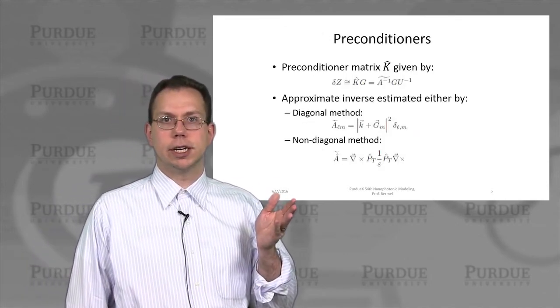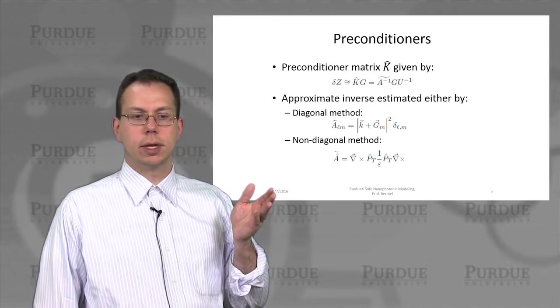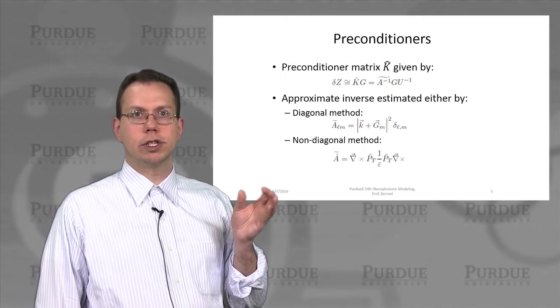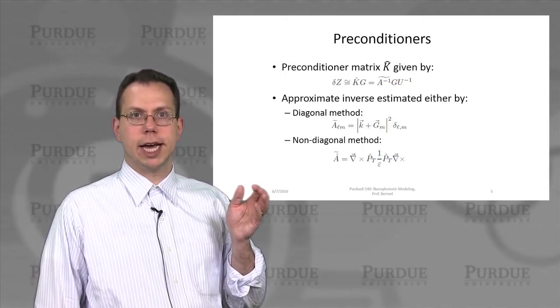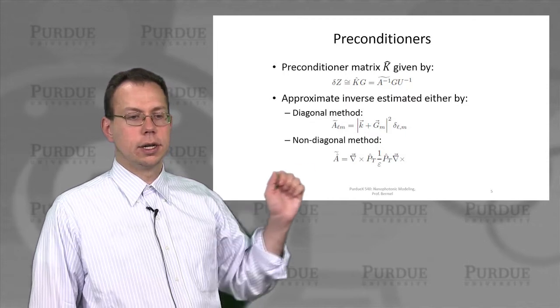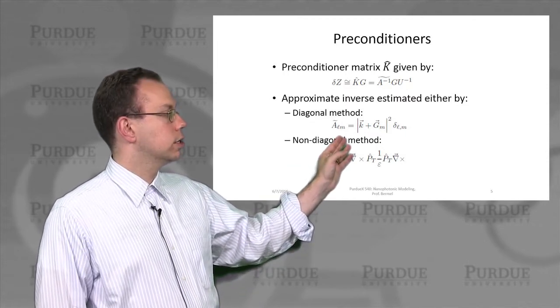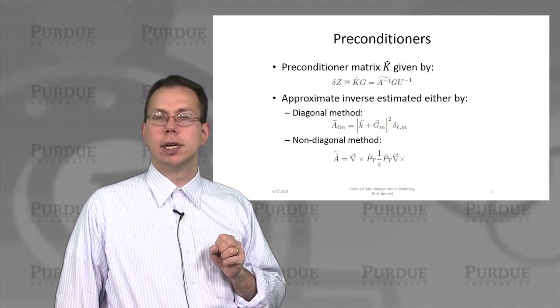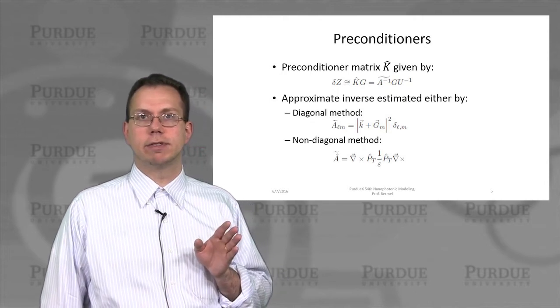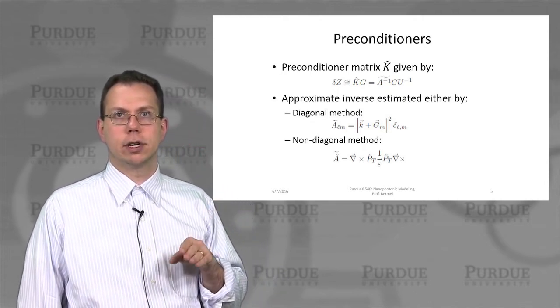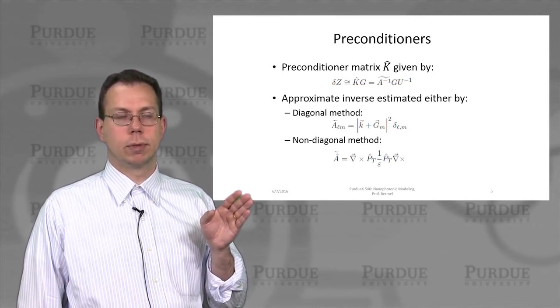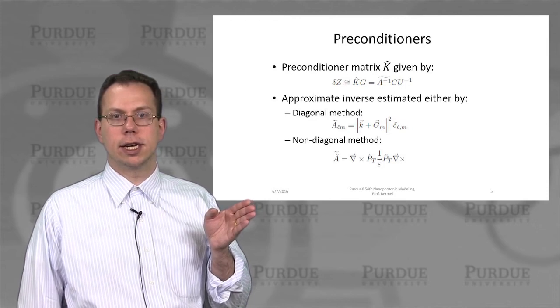So how do we actually get those preconditioner matrices that I was talking about, the K? So there's actually a couple ways to do this. What we're trying to do in practice is make a rough guess at the inverse of the Maxwell operator or eigenoperator. And so one method is the so-called diagonal method in which we just write down that the eigenoperator would be dominated by K plus G squared, which is just a very rough simplification of the curl of epsilon inverse of curl operator by assuming that epsilon inverse is very boring. And it acts basically like an identity matrix.